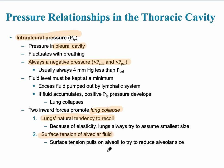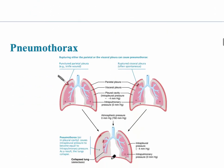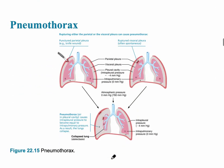The surface tension is something that's reduced by surfactant, which is produced by the type 2 alveolar cells in the alveoli.